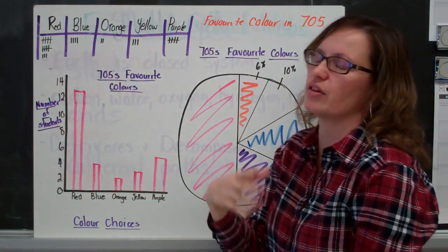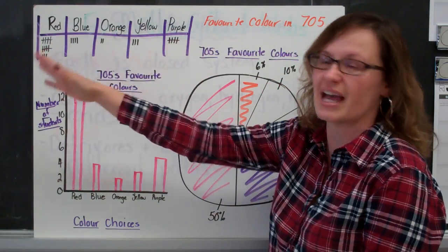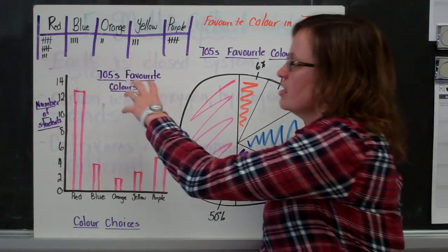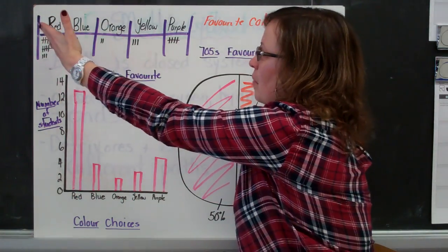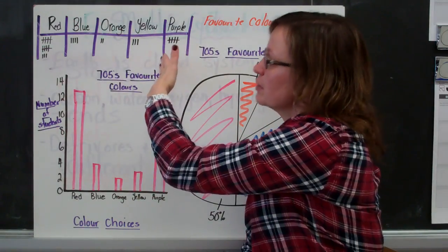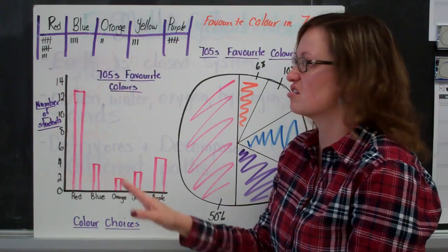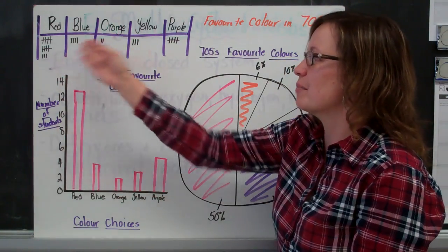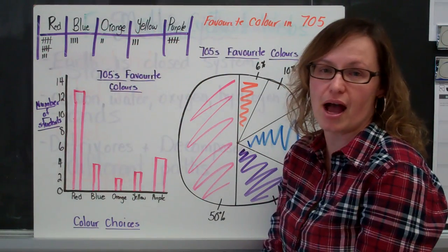I wanted to find out what the favorite colors were in class 705, and these were the color choices. They had to pick one of these. And here are my tallies. So this is an example of explicit data. I've taken my survey results and I've explicitly represented them in a graph. I don't learn anything new from this. It's literally this, but in a bar graph. So I can basically get the same information from the original collection of data as I can from the graph.